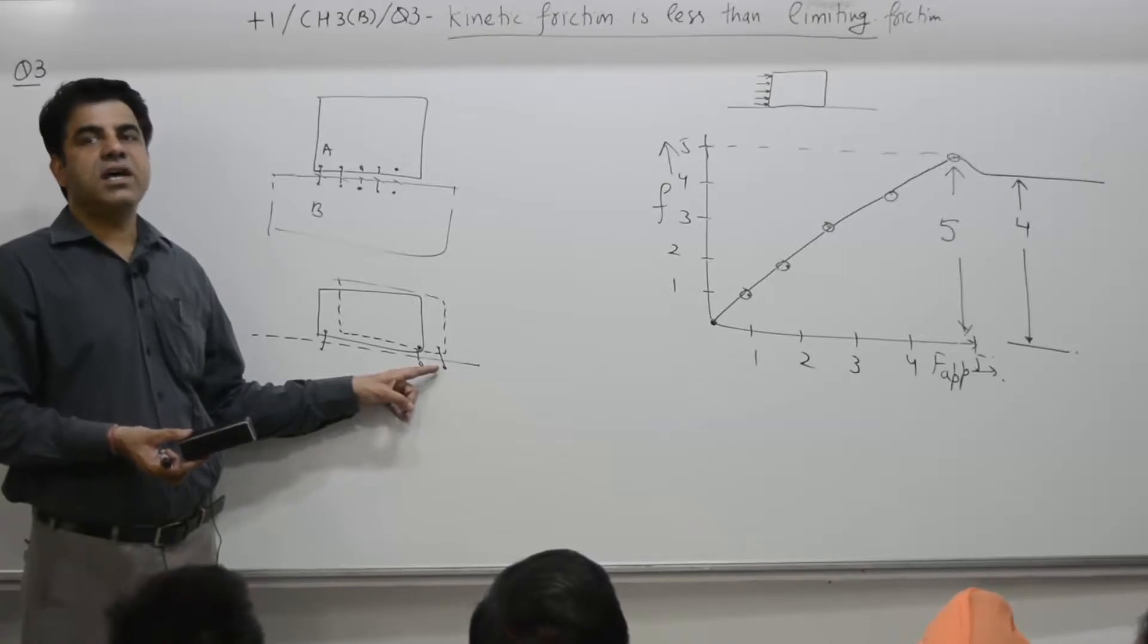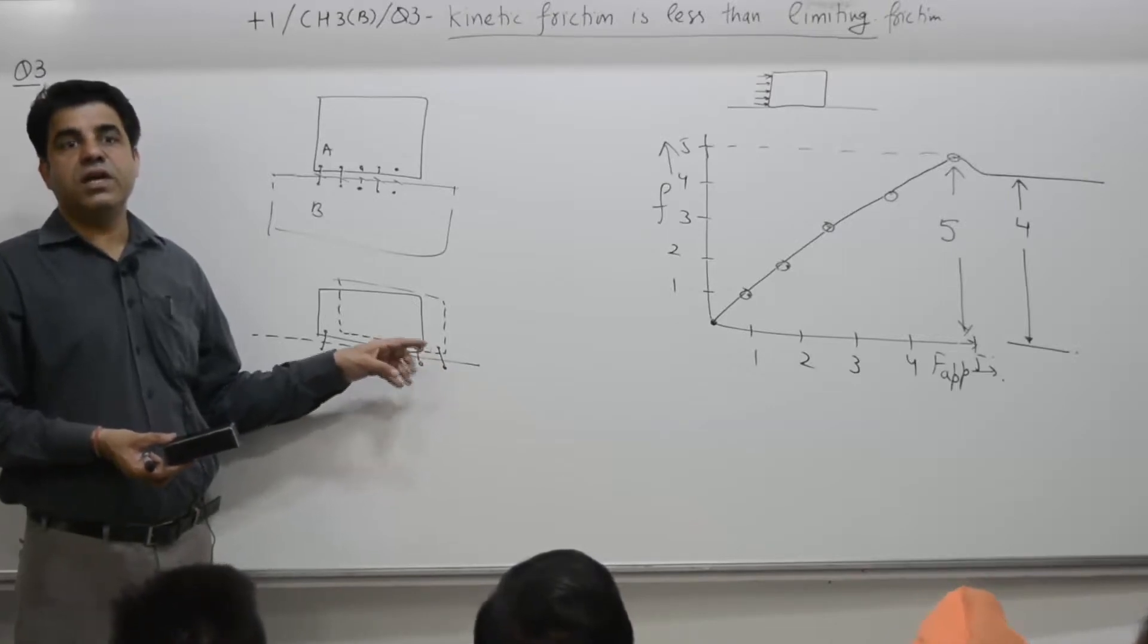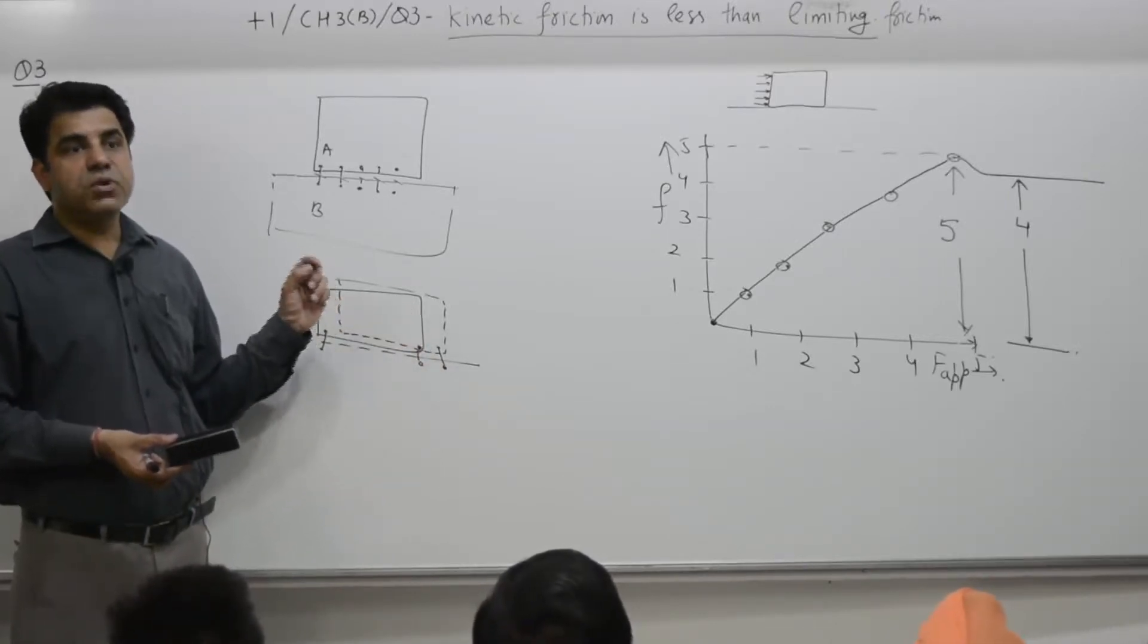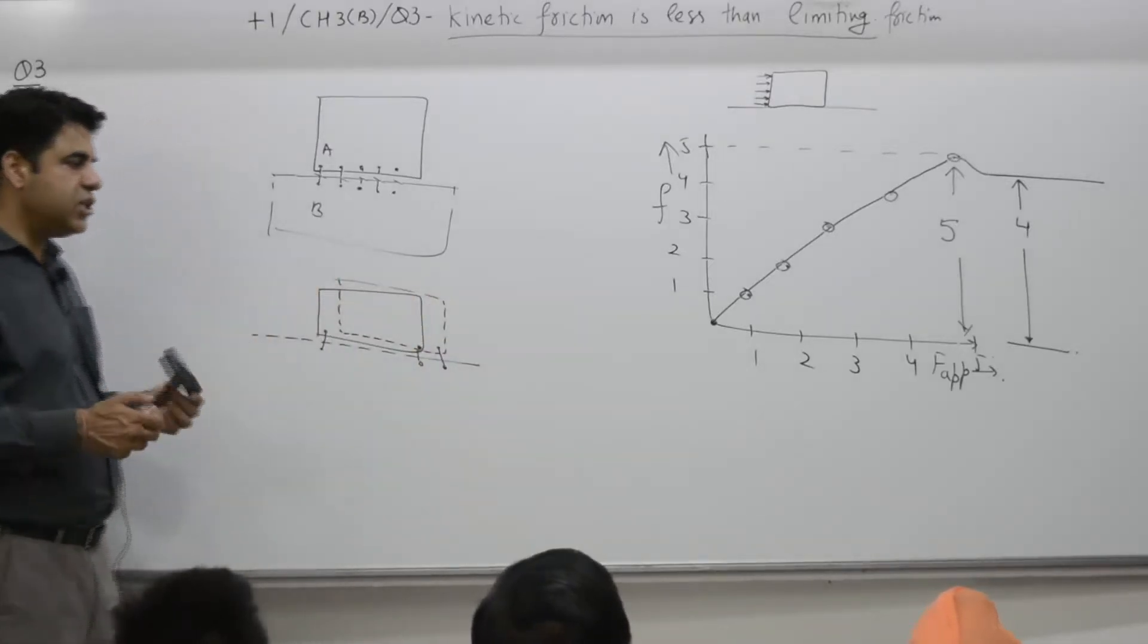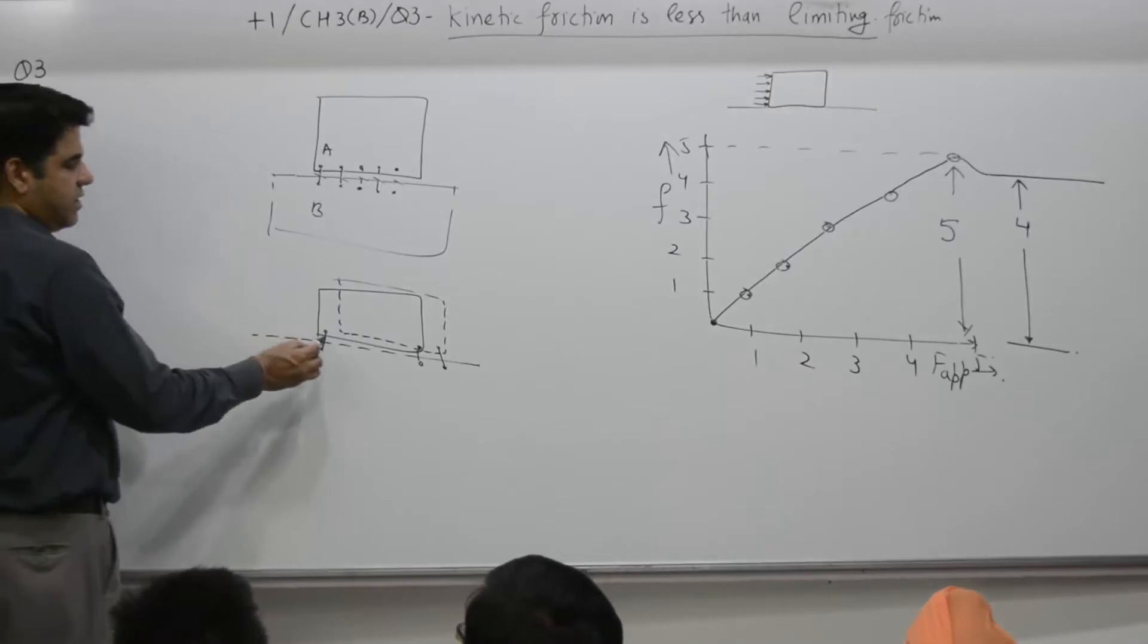For example, if a tire, car is moving at a speed of 100 kilometer per hour, the process of this break and make is very very fast. That is why there is no time that this bond becomes strong enough.